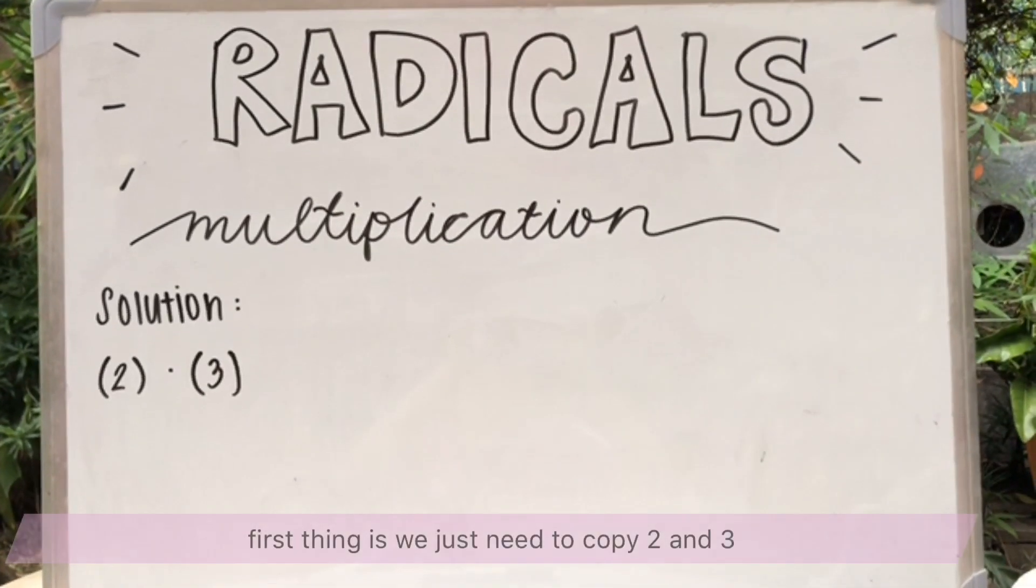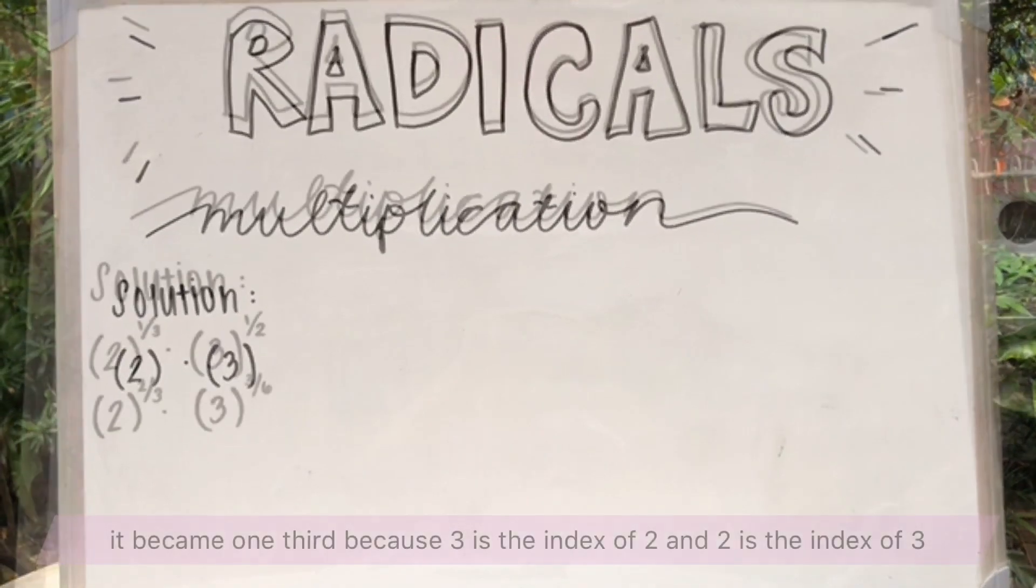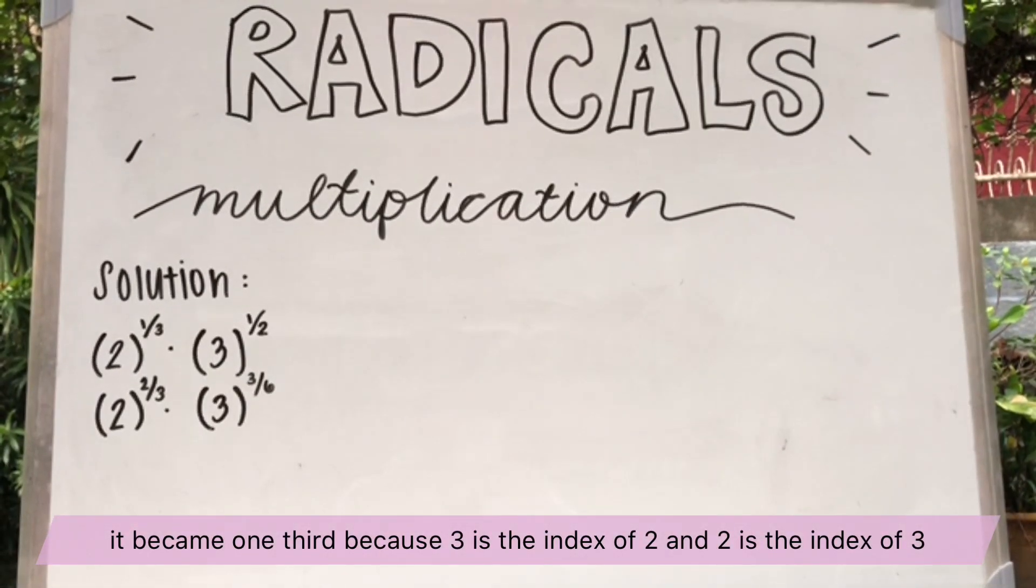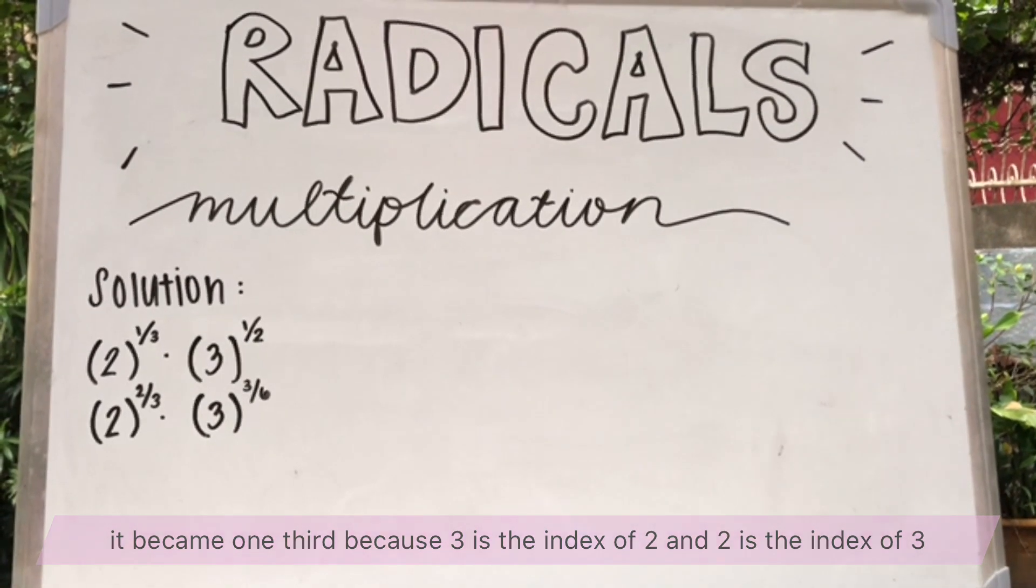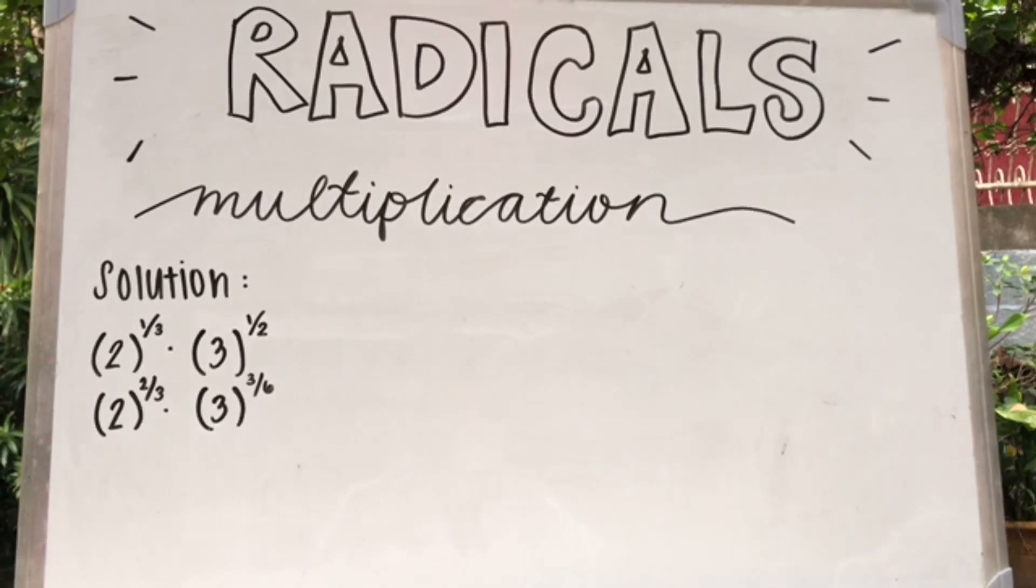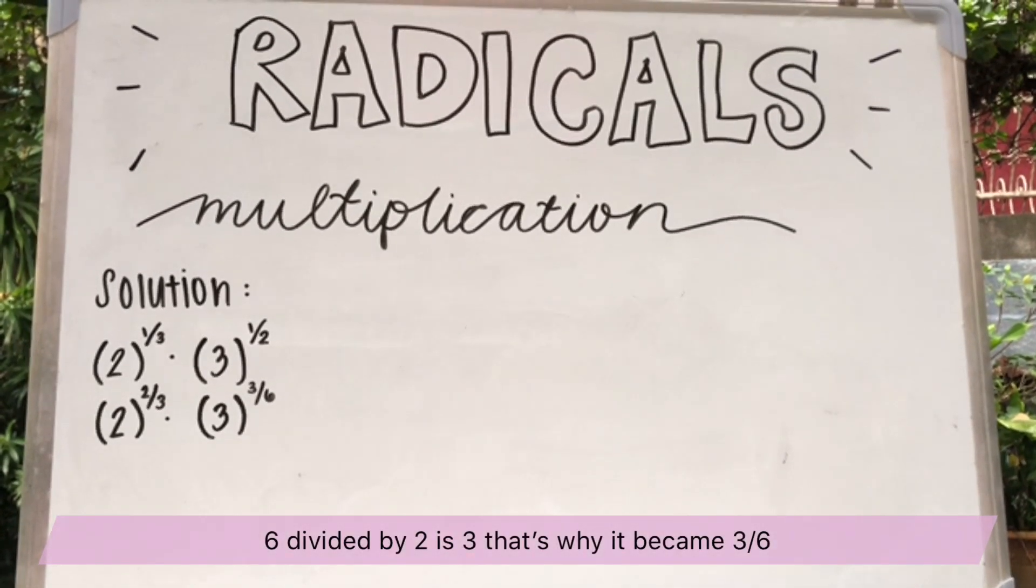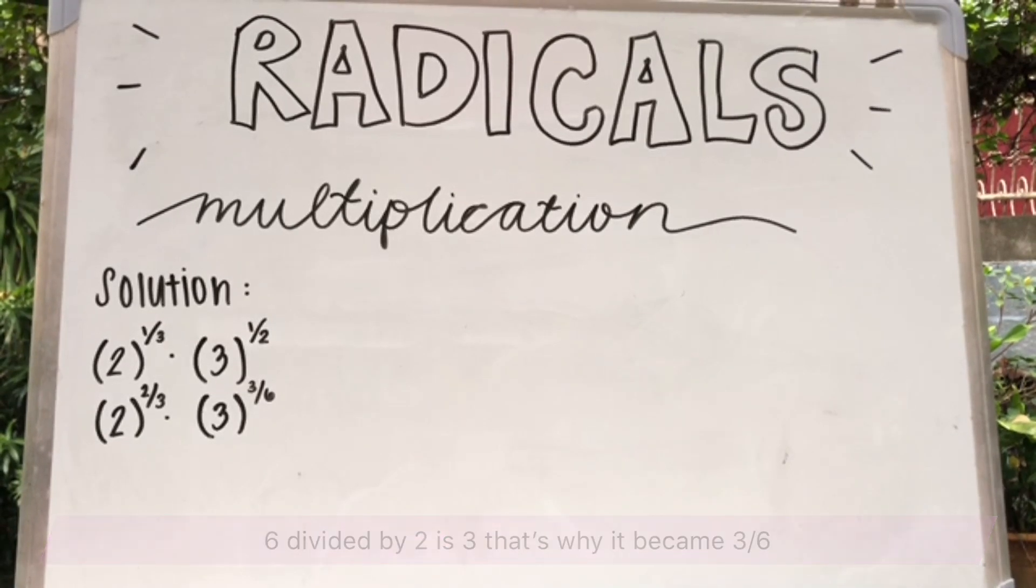First thing is, we'll just copy the 2 and 3. It became 1 third because 3 is the index of 2, and 2 is the index of 3. 2 and 3 has a least common denominator or LCD, which is 6. 6 divided by 2 is 3. That's why it became 3 over 6.